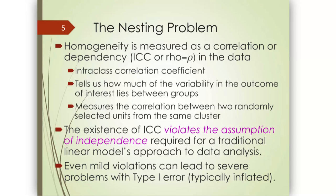That clustering effect — homogeneity — is measured as a correlation called the ICC, sometimes called Rho, which is somewhat of an acronym for rate of homogeneity. It assesses the clustering that occurs within families, within hospitals, within schools, within classrooms.